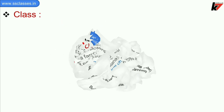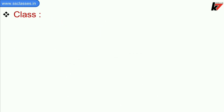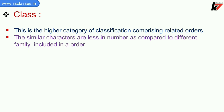Now we will see class. Class is the higher category of classification comprising related orders. As we go from species to genus, family, order, and class, the number of similarities in a particular taxon decreases. For example, class Mammalia includes orders Primata and Carnivora.